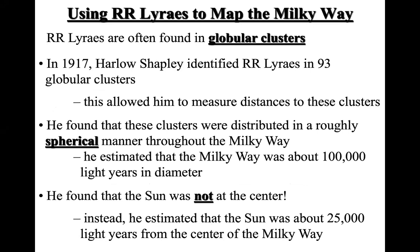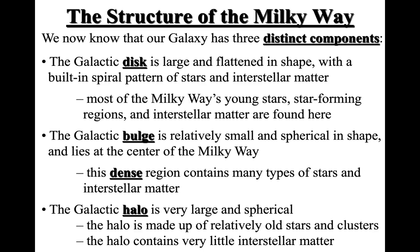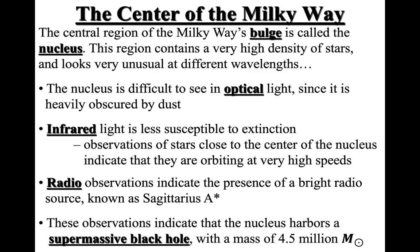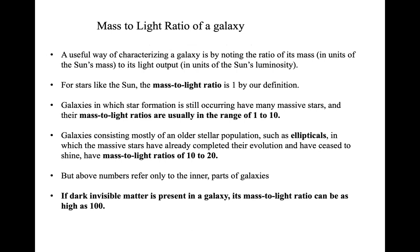Previously we discussed Cepheid variables and how they helped discover the Andromeda galaxy. We also talked about how RR Lyrae stars were helpful to map the Milky Way, its different parts, and the motion of stars in different sections. We covered the central region including Sagittarius A, how to find the mass of the Milky Way, galaxy rotation curves, the discovery of dark matter, and the mass-to-light ratio of galaxies.